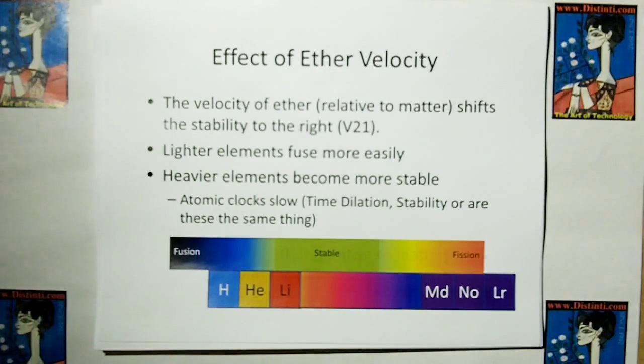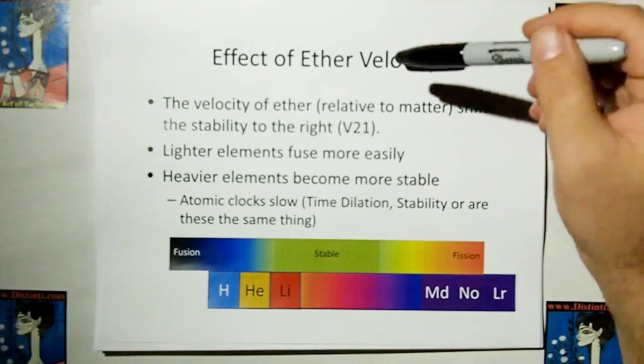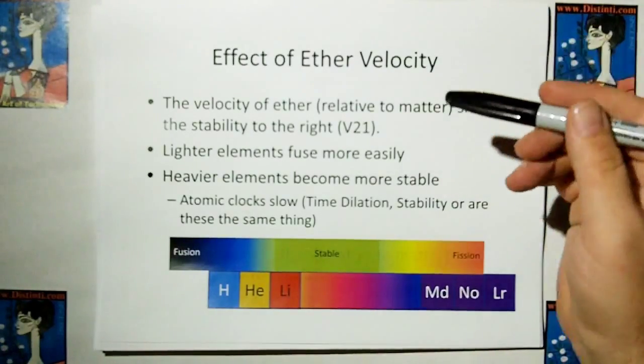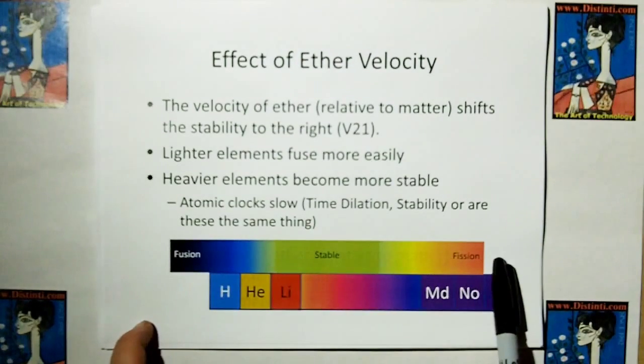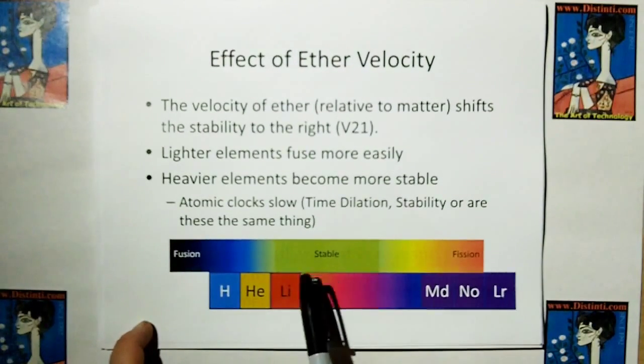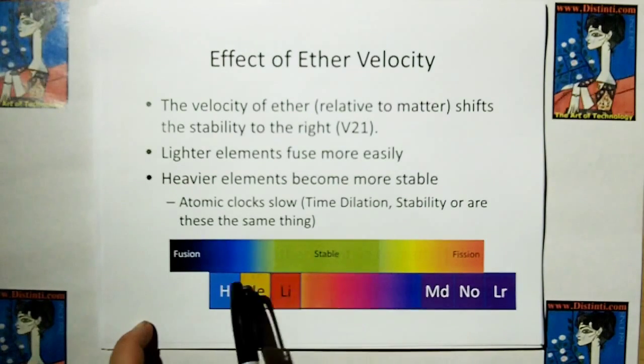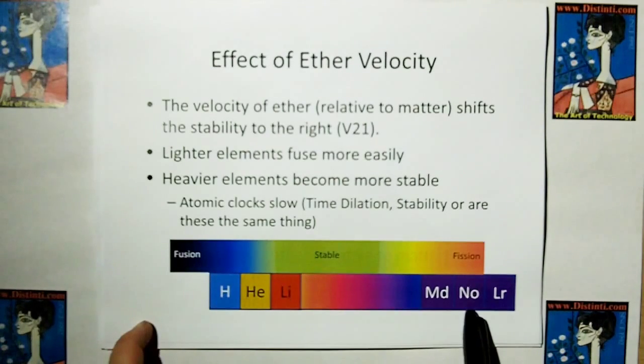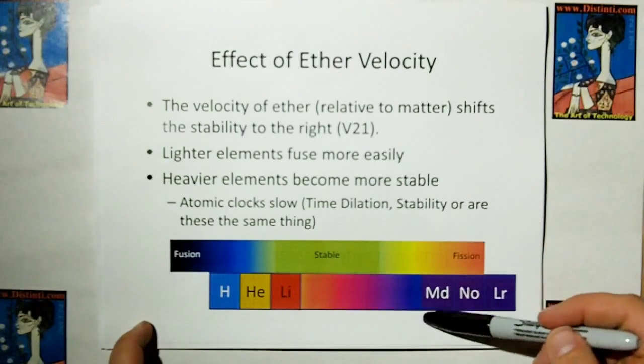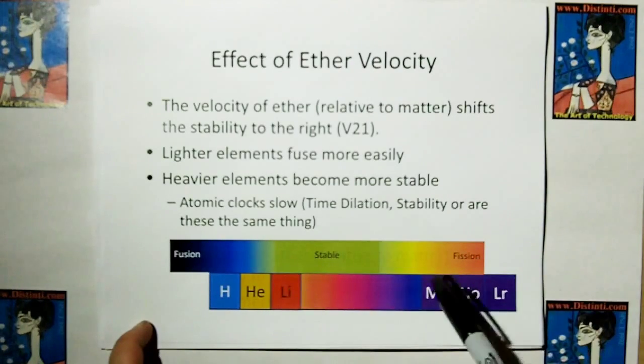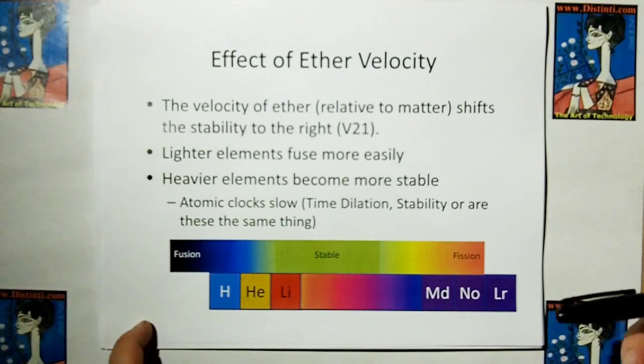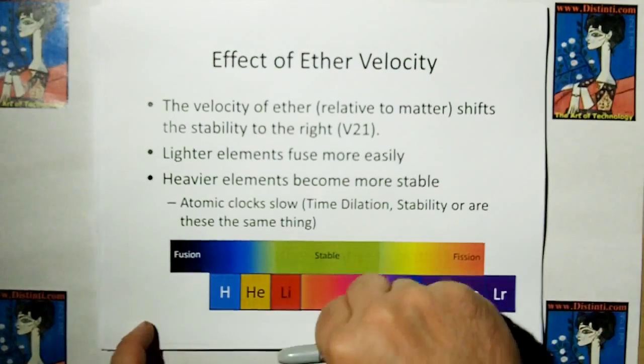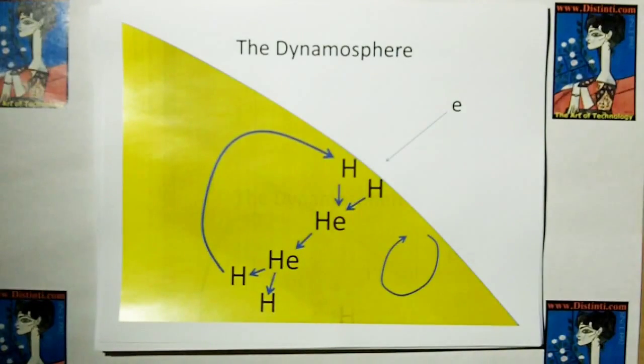We showed that in video 14, or was it somewhere around there? But ether ethereal velocity also has an effect on stability. The faster the ether is moving, the more this stability chart slides to the right. And as you increase the velocity of ether as it's passing hydrogen, hydrogen will start fusing into heavier elements. And the more heavier elements will become more stable. But of course they say that the reason for atomic clocks becoming stable is because of time dilation, because of the motion. Well, pretty much I'm going to show you it's the same damn thing.